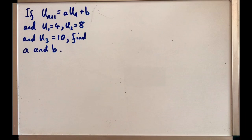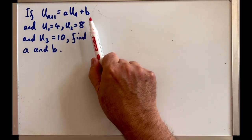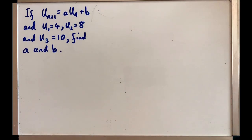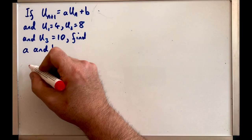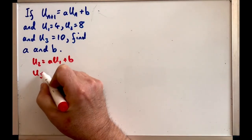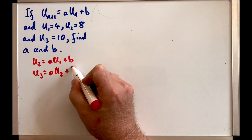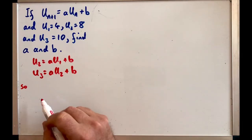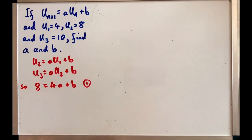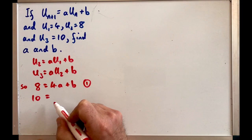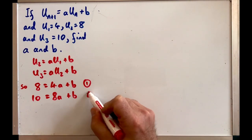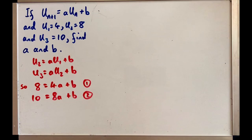Let's look at our second example. If Uₙ₊₁ equals aUₙ plus b and U₁ is 4, U₂ is 8, and U₃ is 10, find a and b. This is really another simultaneous equations question because if you remember, U₂ equals aU₁ plus b and U₃ equals aU₂ plus b. So putting in our numbers we've got 8 equals 4a plus b, let's call that equation 1, and we've got 10 equals 8a plus b, we'll call that equation 2.